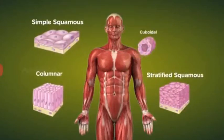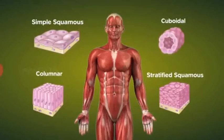Epithelial tissue is subdivided into simple squamous, stratified squamous, columnar, and cuboidal epithelium based on the shape and function of their cells.